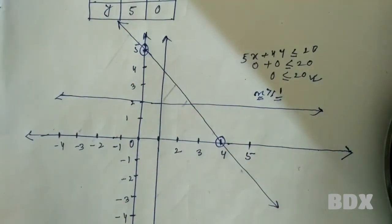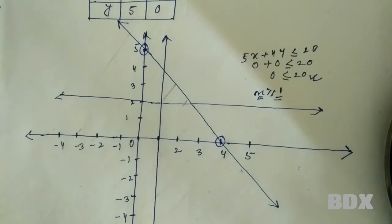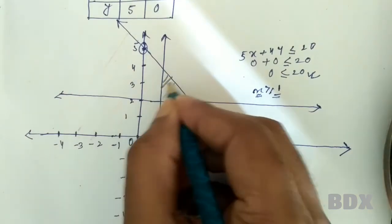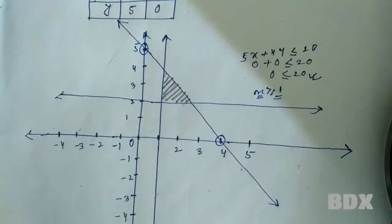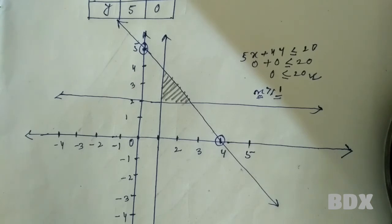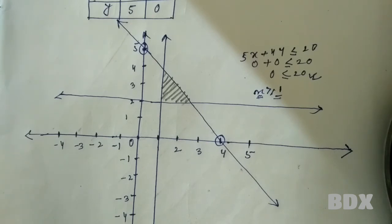Therefore the final solution region for these three linear inequalities is the intersection of all three regions, shown here. If you still have doubts related to this problem or other problems related to linear inequalities, you can ask in the comment section. We have completed this topic; from the next class we are going to start a new topic.